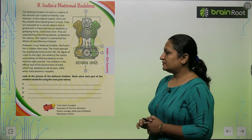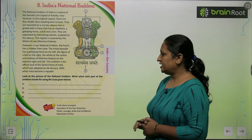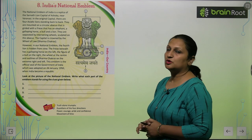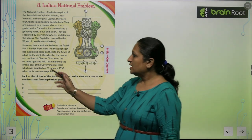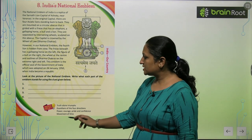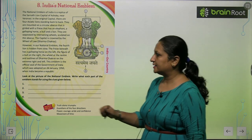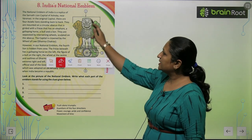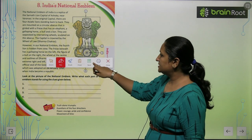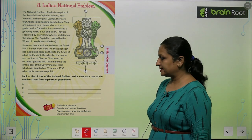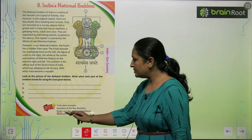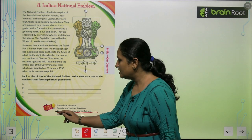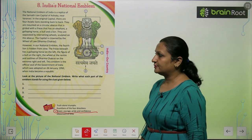Look at the picture of the national emblem and write what each part of the emblem stands for using the clues given below. The first part is the lions — lions symbolize power, courage, pride, and confidence.